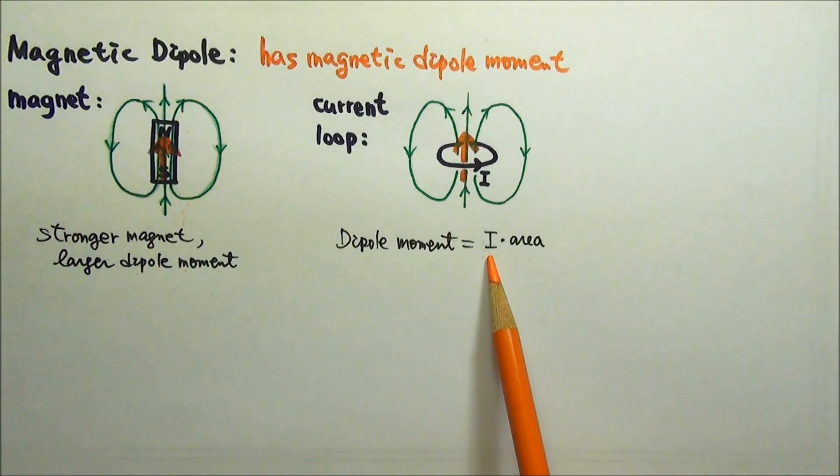So the larger the current, the stronger the dipole moment. The larger the loop area, the stronger the dipole moment.